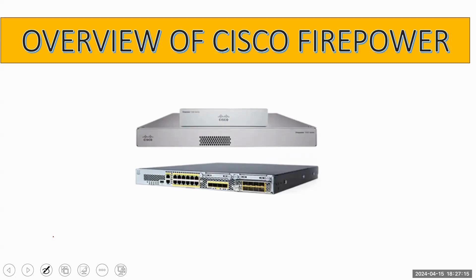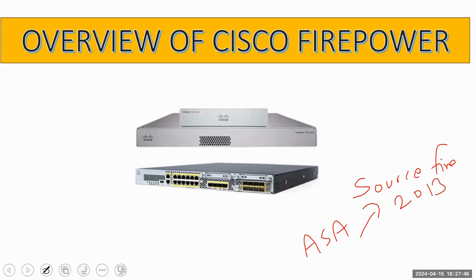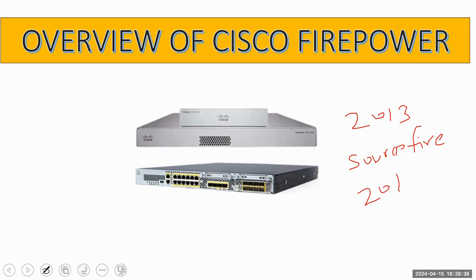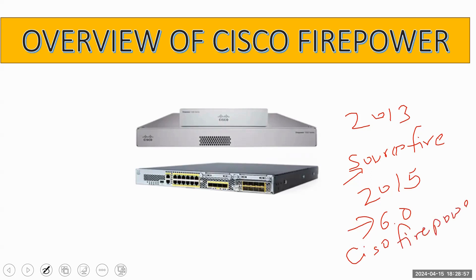In 2013, Cisco acquired a company known as SourceFire. Cisco already had its own traditional ASA firewall with different hardware models, working on the concept of stateful inspection. After acquiring SourceFire, Cisco worked on the SourceFire code and in 2015 released version 6.0 integrated into its ASA. With this release, Cisco introduced a new term — Cisco Firepower — entering the market with a next-generation firewall.